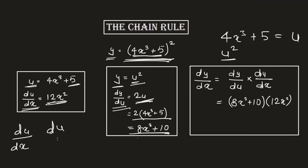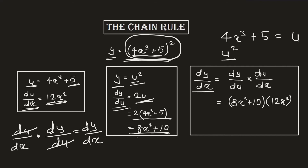Now we have both dy/du and du/dx. Multiplying them together, du and du cancel each other, and we finally conclude dy/dx — which was initially difficult from the complicated term alone. On the third box I am calculating dy/dx by multiplying dy/du from the first box and du/dx from the second box. The product of these two outputs is the final answer. This concept of chain rule is extremely useful for forward and backward propagation in gradient descent.